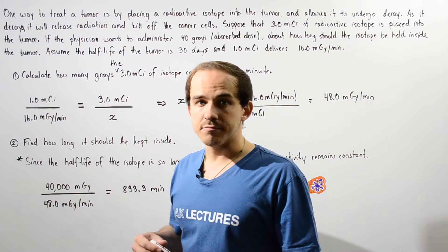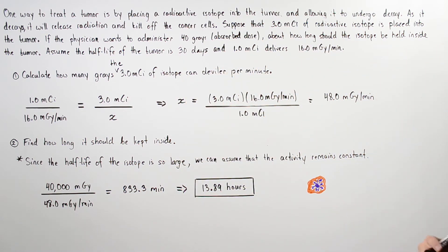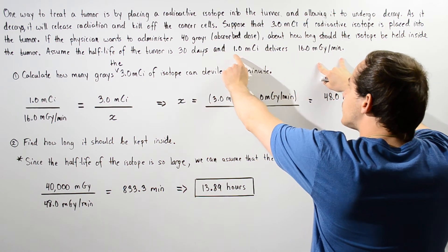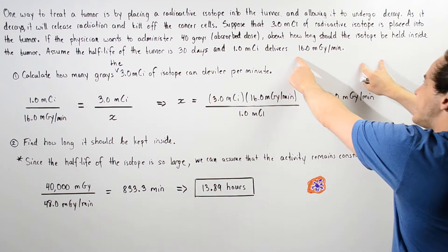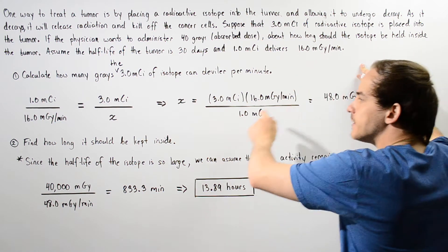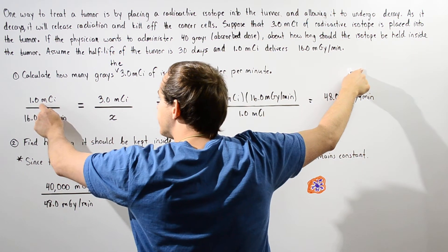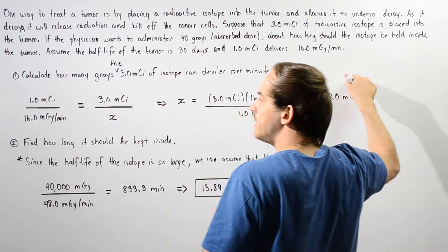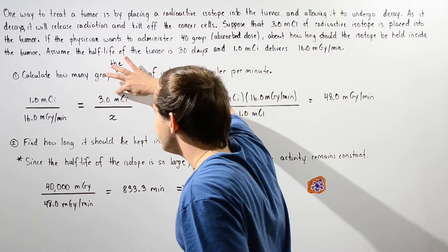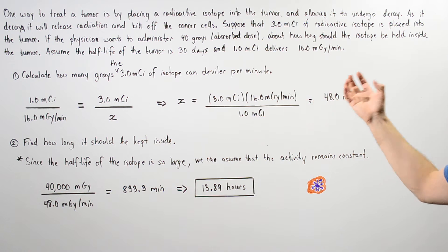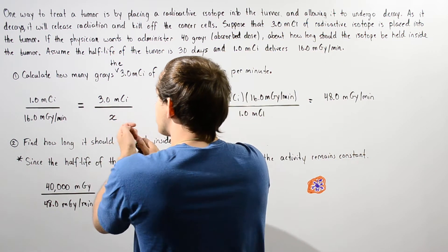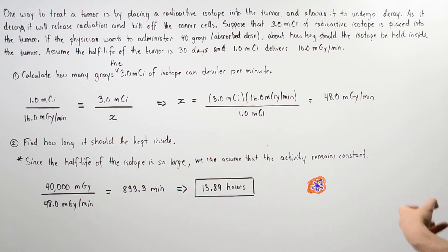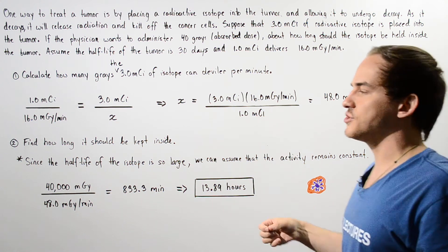We want to set up a proportion. We know from this information that one millicurie of our given isotope is able to release 16 milligrays of radiation every single minute. So, one millicurie divided by 16 milligrays per minute, and this is equal to three millicuries, because the isotope we are using doesn't have one millicurie but rather three millicuries. And we divide that by x, where x is how many grays our particular three millicurie radioactive isotope can release every single minute.